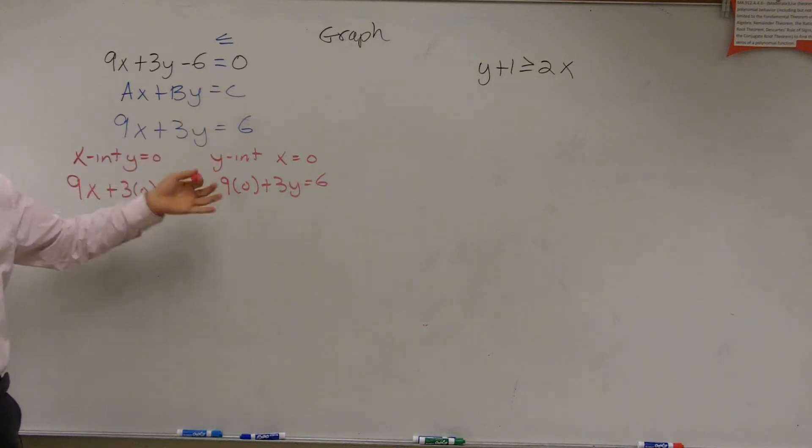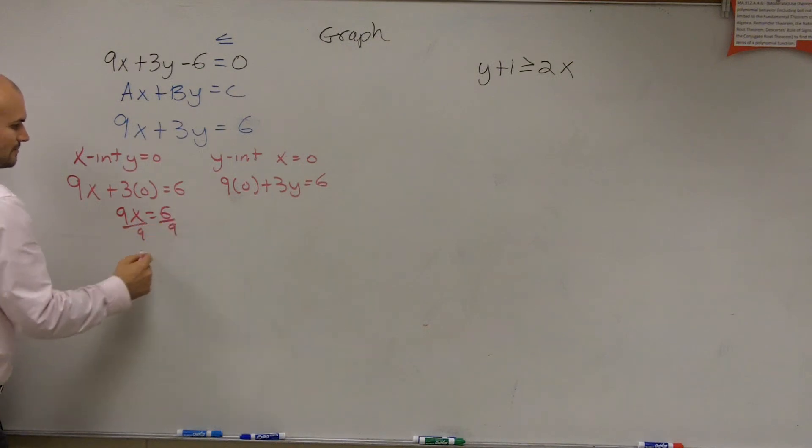I'm just doing this to make it easier, but you could, if you wanted to keep the less than or equal to, that's fine as well. I mean, it's not going to change what you're doing. So here, now I have 9x equals 6, divide by 9, x equals 2 thirds.